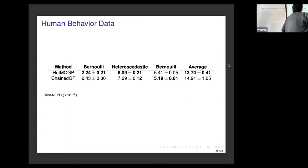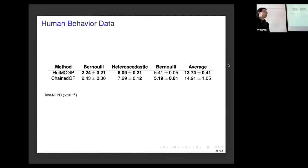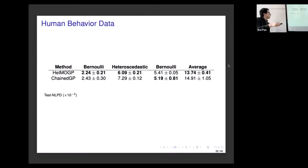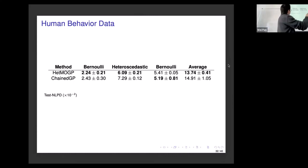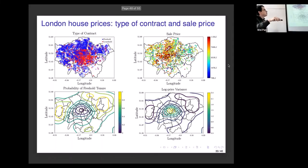This is the human behavior data. We removed some data for some outputs and looked at the prediction the model would make, assessing with negative log predictive density — lower is better. For those binary variables, one of them does better than the independent model, and on average we are better. Here's another example — a spatial data set of London house prices. The two variables modeled were the type of contract, which is binary, and the sale price. The predictions show the probability of freehold contract type and the log price variance. Compared to the independent model, we do better.